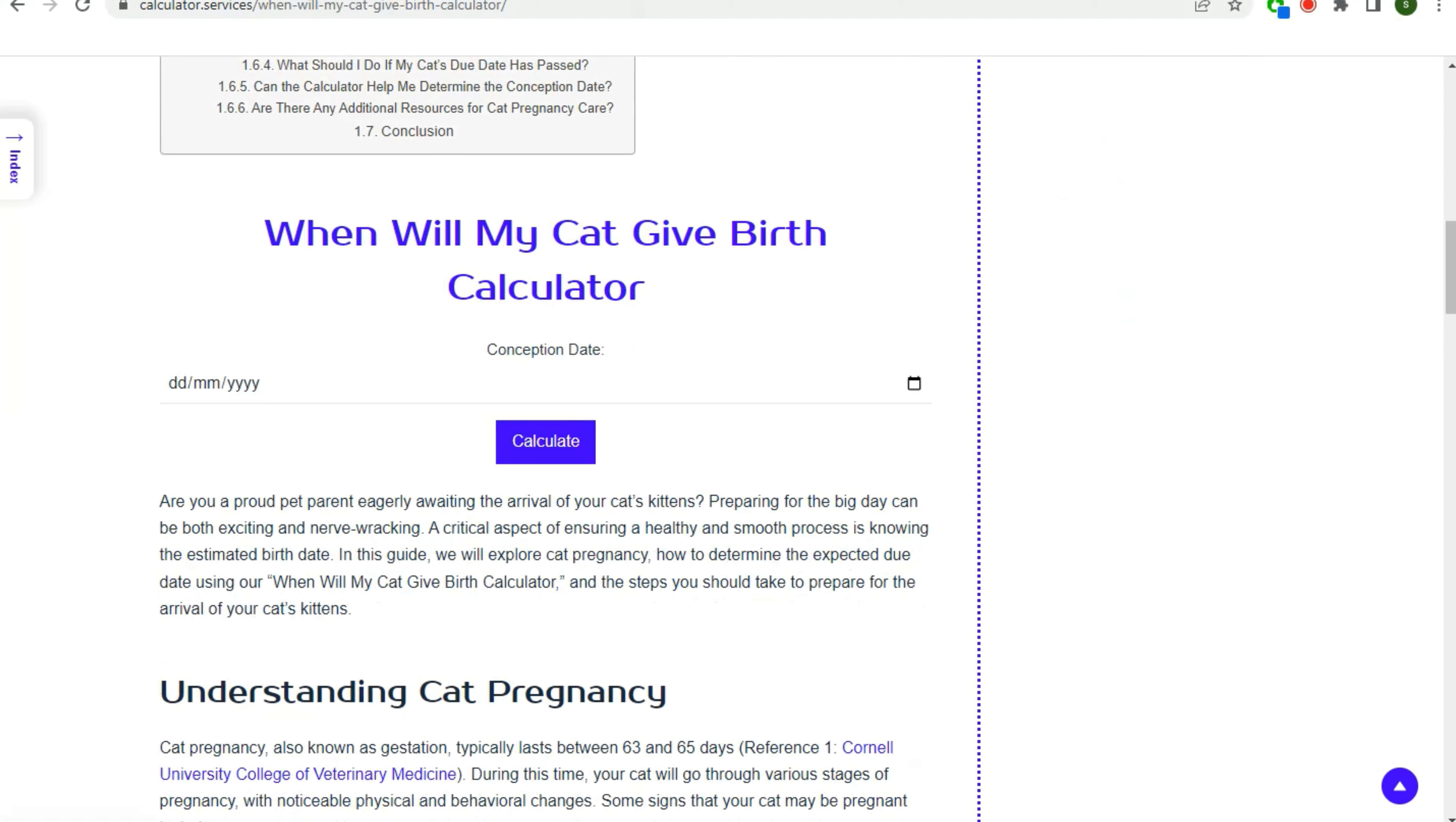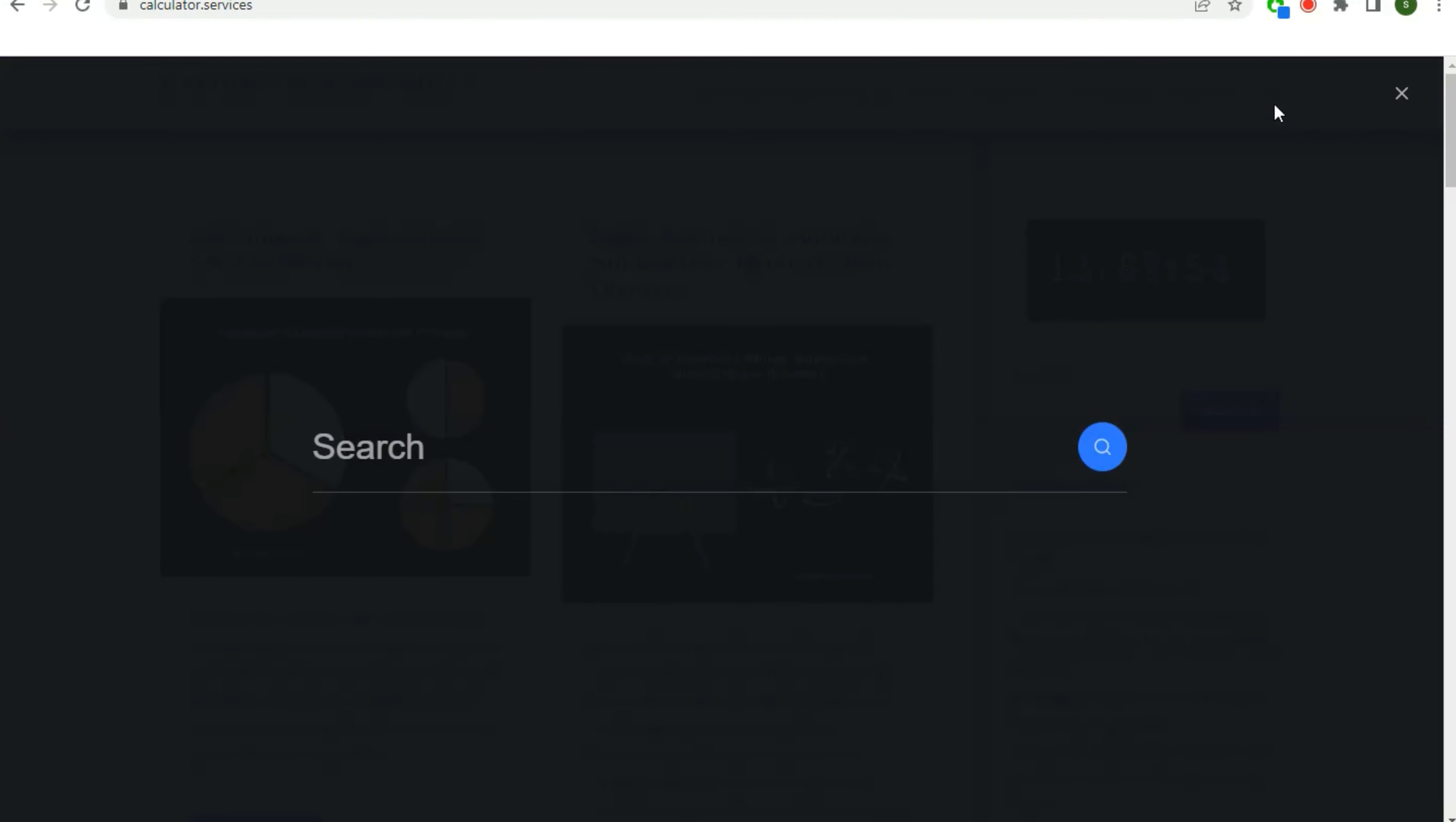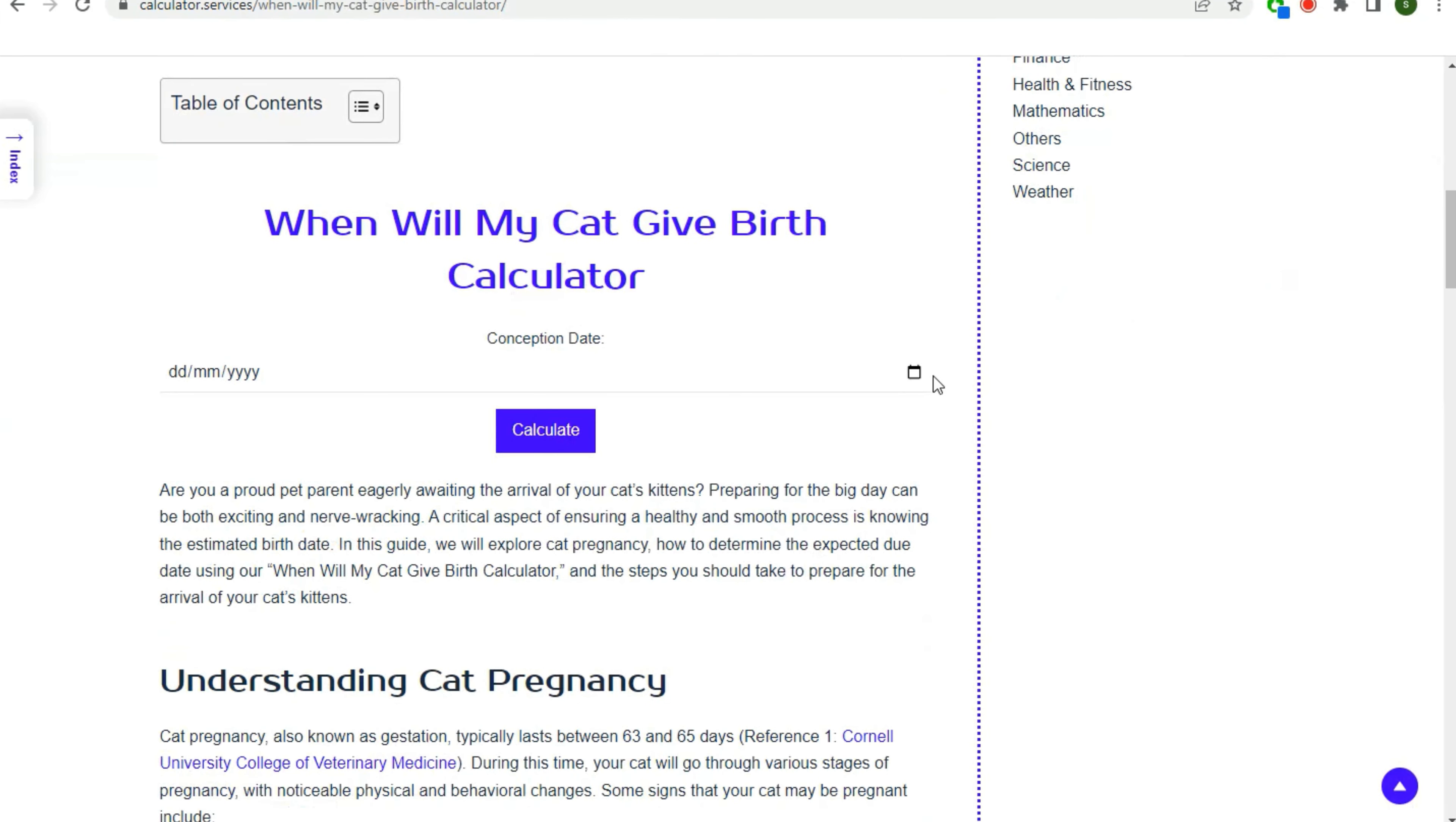First, go to our Calculator Services website. Then search for When Will My Cat Give Birth. Scroll down and enter the conception date. Click on calculate and see your conception date result.